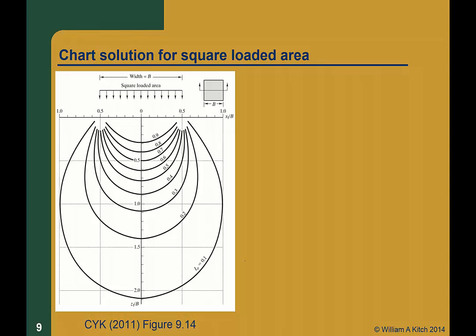Here is an example of one chart solution for the Boussinesq stress distribution. In this case, it is for a square loaded area of width b. The solution is formulated as delta sigma z equal to I sub sigma times the applied surface stress q. As shown by this chart, this particular solution can be used to compute the induced vertical stress for any point that lies on a vertical plane which bisects the square loaded area. It can be used to compute the induced stress both underneath the loaded area and outside of the loaded area. However, it can't be used to compute the induced stresses near the corner of the loaded area or at a point that is not along the centerline. The chart uses dimensionless parameters x_f over b and z_f over b so that it is applicable for a square loaded area of any size.